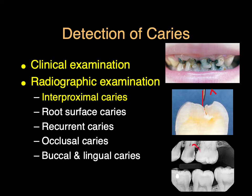Radiographic exam is predominantly used for interproximal decay. That being said, we do use it for identifying root surface decay, recurrent decay around restorations, and to a certain degree with occlusal decay and buccal and lingual caries. But the predominant modes of identifying occlusal and facial lingual surfaces is through clinical exam.